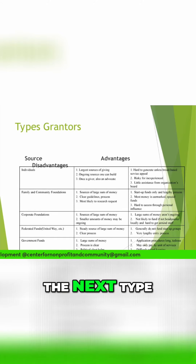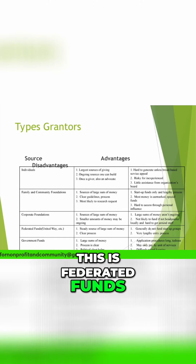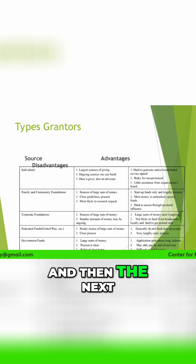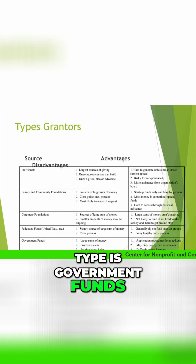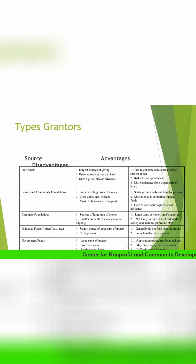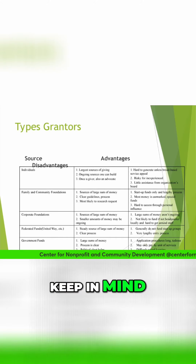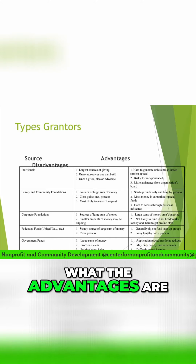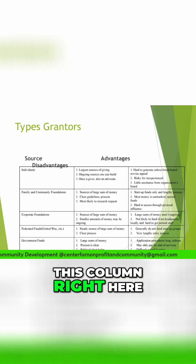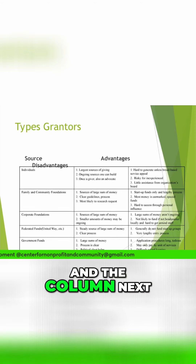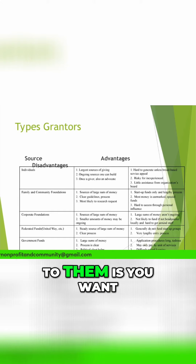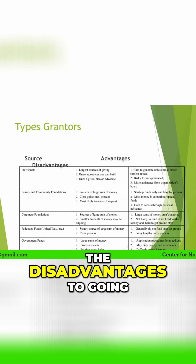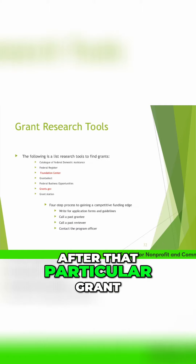Then you have federated funds like United Way, and then government funds, which is by far the hardest. Keep in mind, when you go after grants, you want to know what the advantages are — shown in this column — and the column next to it shows the disadvantages to going after that particular grant.